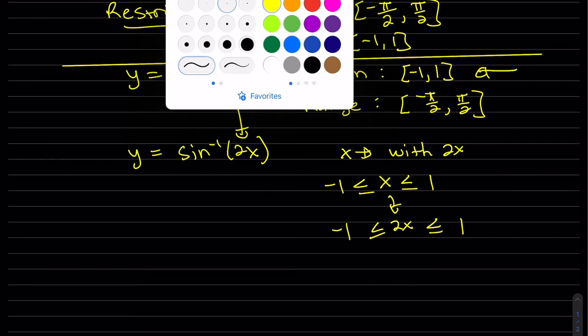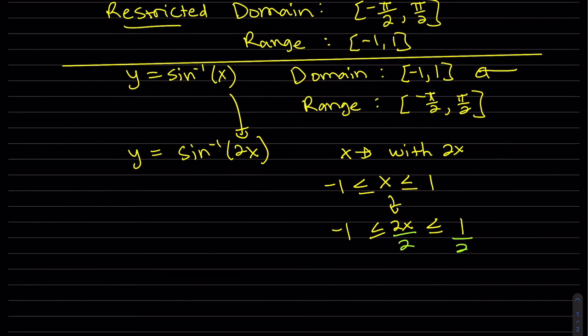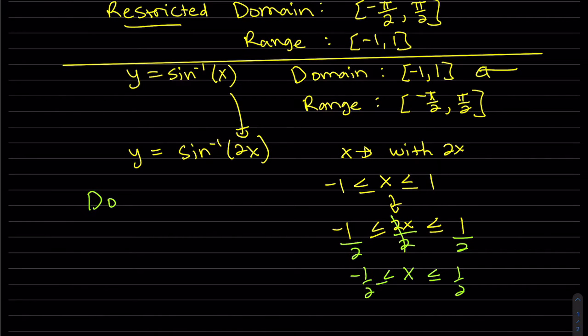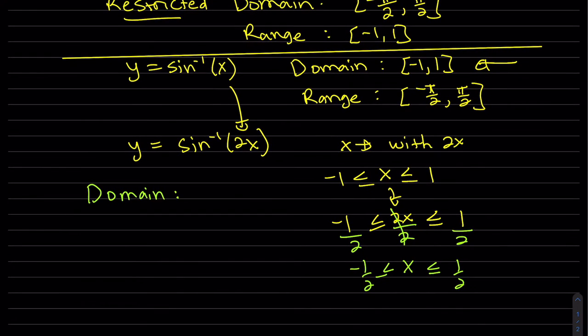So isolate the x. So our domain is from minus one half to one half, and the range is still the same.